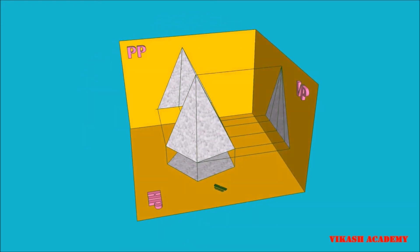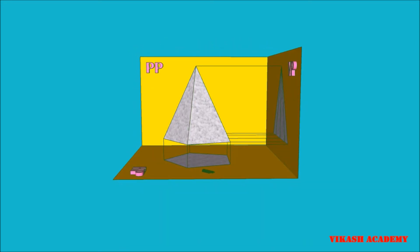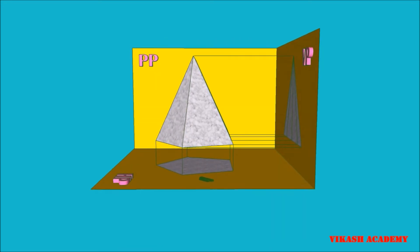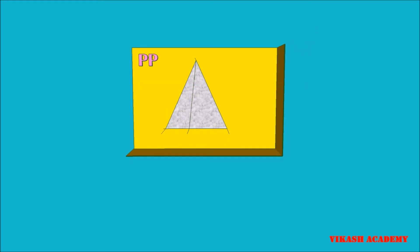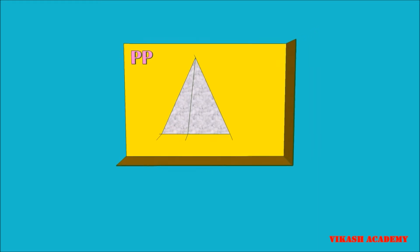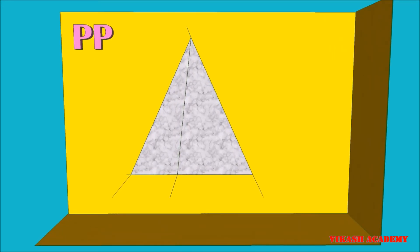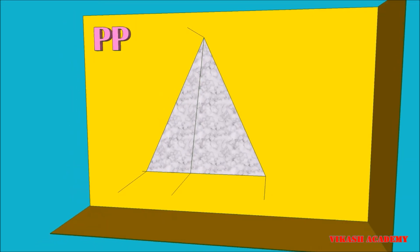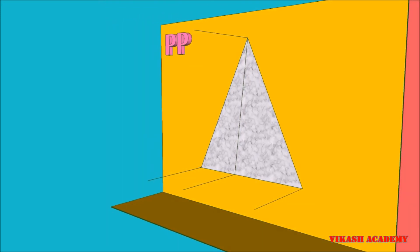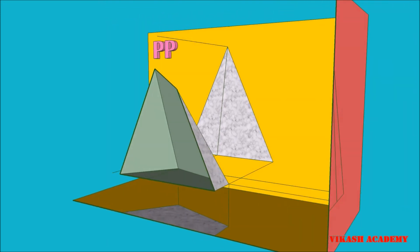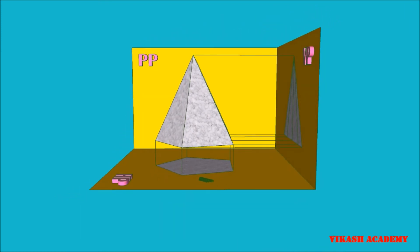When we observe this object from the right hand side, we obtain a triangle on the left profile plane. Along with the triangle, you are able to see one extra line. This represents that two faces are visible from the right hand side, due to the projector lines drawn from the pentagonal base as well as the top of this pentagonal pyramid.